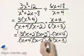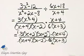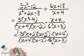3 divided by 3 is 1. 6 divided by 3 is 2. And now let's write down what we have.